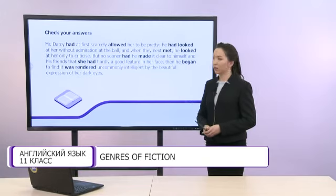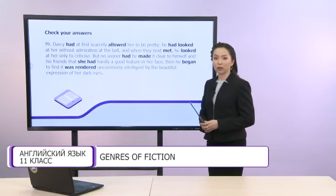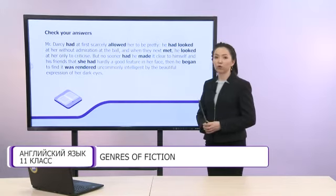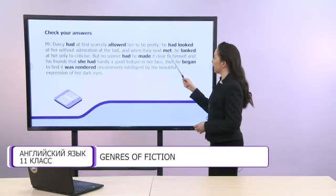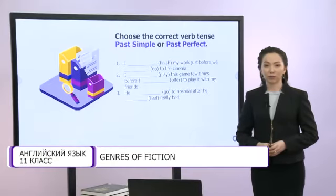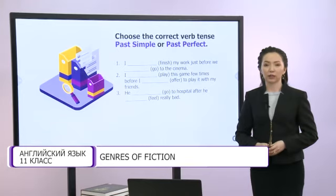Now let's check together. Had allowed is an example of past perfect tense. Had looked is an example of past perfect tense as well. Met and looked are examples of past simple. Had made is an example of past perfect tense. She had is an example of past simple. If you have found them all, great! So we use past simple to talk about actions in the past, and we use past perfect tense to talk about actions that happened before another action in the past.